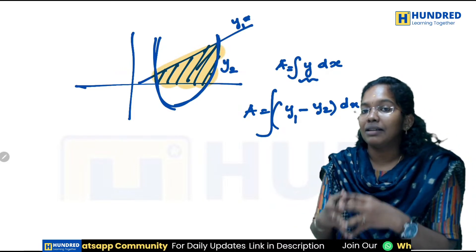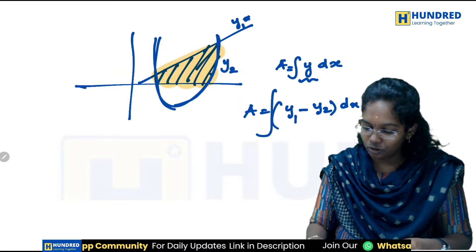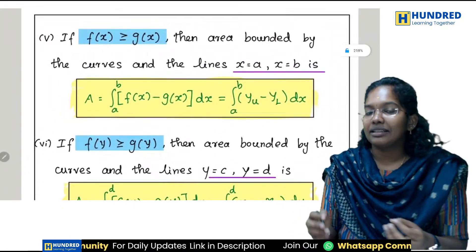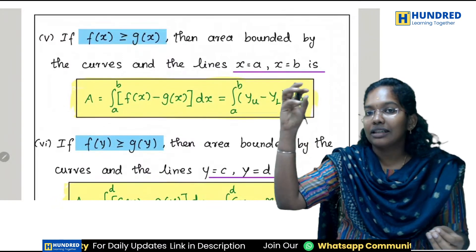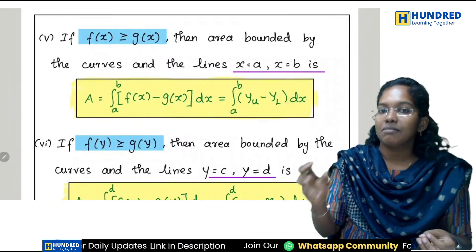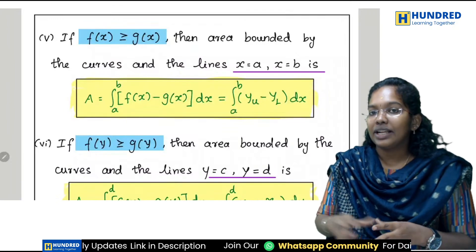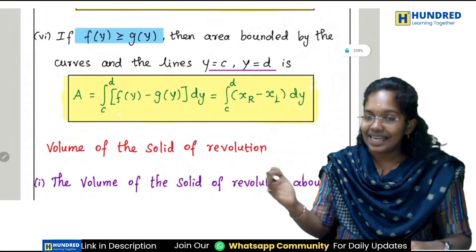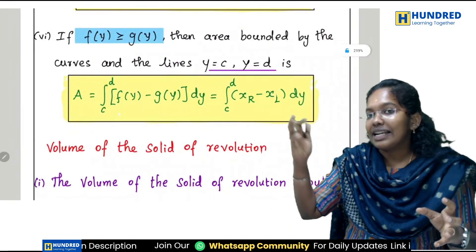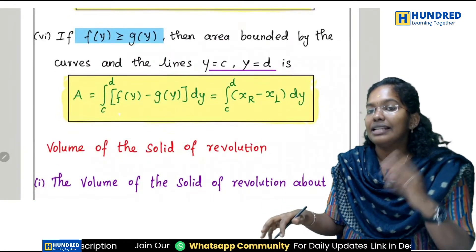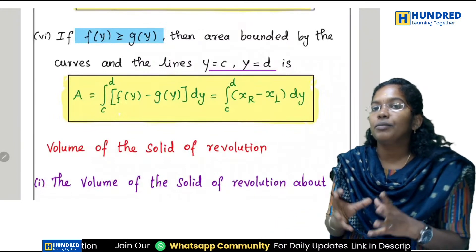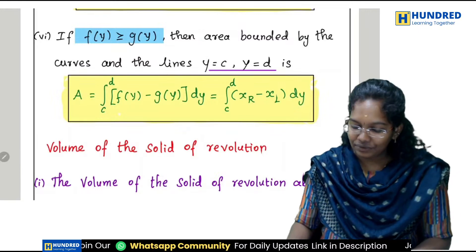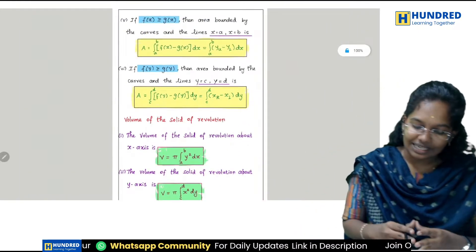The y value on top minus the y value below gives the area. This is the upper equation y1; if you are on top that is the first curve, then the first equation becomes the lower one. Similarly, for curves on the right and left: right side curve minus left side curve, integrated, gives the area. Exercise 9.8 is very important.